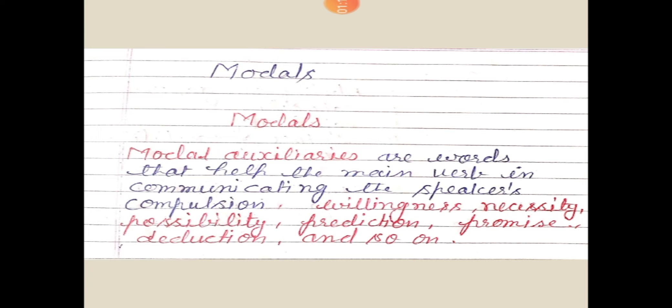When a sentence contains a bare infinitive, modals are being used. Modal auxiliaries are: can, could, may, might, must, need, ought to, ought not, shall, should, will, would, and used to. In negative form: can't, couldn't, mustn't, needn't, won't, and wouldn't.